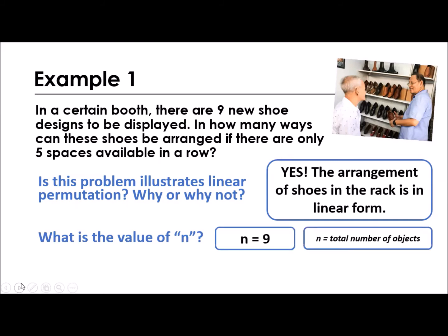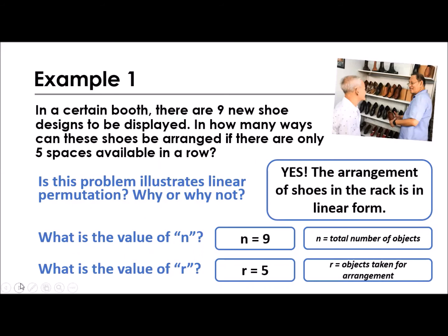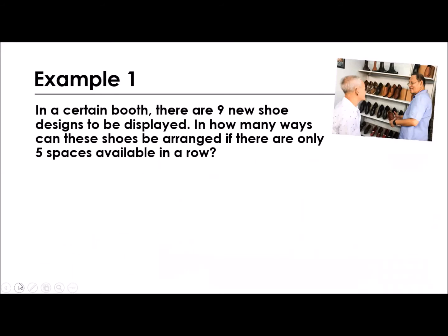And what is the value of n? So the value of n is 9 because that is the total number of objects involved. And the value of r, how many are taken? How many will fit in the available space? So that is 5. So please take note of that. That's how to analyze the problem.